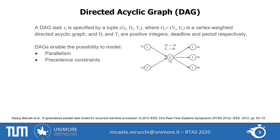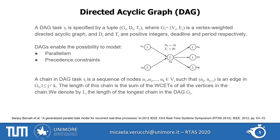That is why we decided to pick the DAG model to represent this kind of application. This model was introduced in 2012 by Sanjay Baruah and represents tasks as directed acyclic graphs. The nodes of the DAG are parts of code, while the edges represent precedence constraints between them, meaning node 2 cannot start its execution until node 1 has completed. Node 3, for example, cannot start until both node 1 and node 2 have finished. This model allows you to represent explicitly both parallelism and precedence constraints. The longest chain in the DAG is crucial for schedulability.